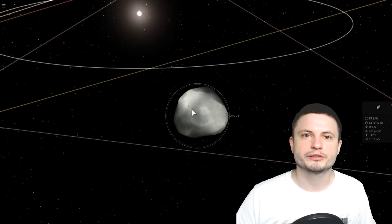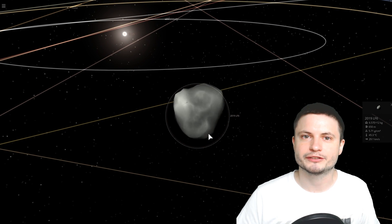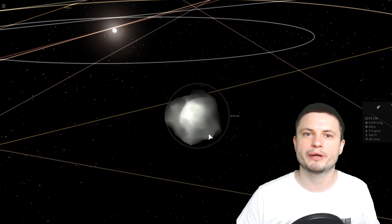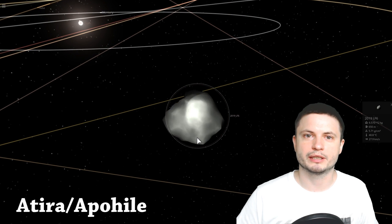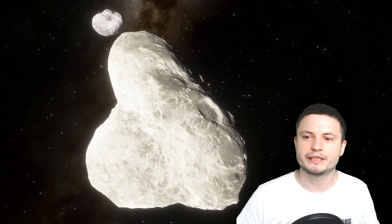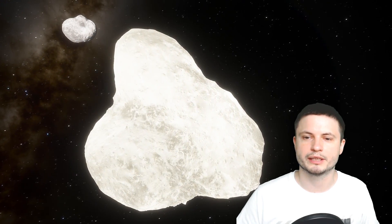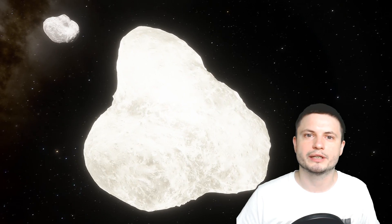So these asteroids are referred to as interior Earth object asteroids, also known as Atira or Apohele asteroids, named after some of the first ones we've discovered. And this right here is actually the Atira asteroid and as you can see it even has a small partner next to it. So these unusual asteroids are, well actually they're very interesting to us for one reason.